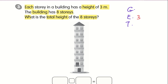Our 'each' is 3. And the building has 8 stories — that means there are 8 times of the 3-meter height, so 8 is actually the group. We know there are 3 meters for each story and 8 stories, but we don't know the total. So what's the total? We are unsure. To find out the total, we do a multiplication.